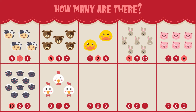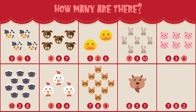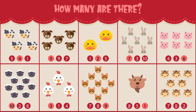How many chickens do you see? There are nine cats. How many goats do you see? There is one goat. How many horses do you see? There are eight horses.